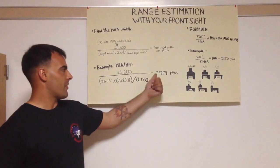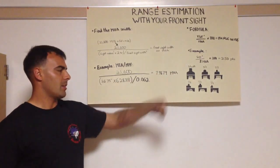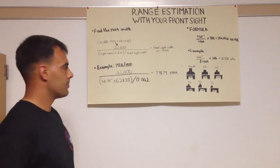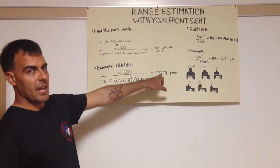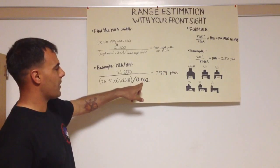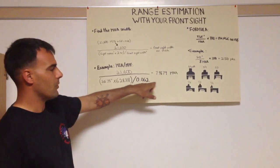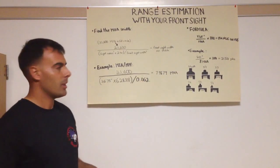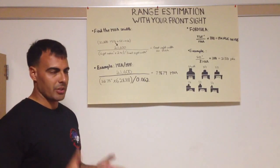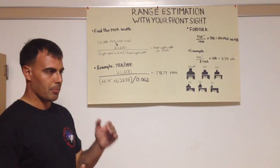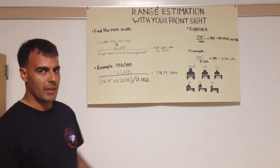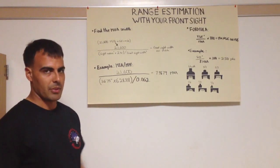And that gives me 7.9679 minutes of angle, or about 8 minutes of angle. In order for this number to be exactly 8 minutes of angle, my front sight post would have to be 0.06225 inches in width, which still falls within the tolerances of plus or minus 0.0005 inches that the national match front sight has to be within.